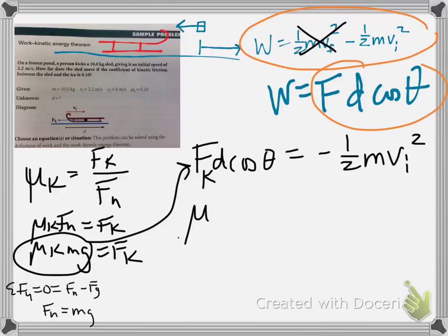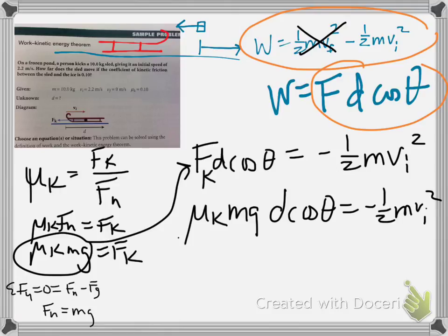Okay, so that gives us mu k, mg, d, cosine theta equals negative one-half mvi squared. What are we solving for? What are we solving for? Okay.